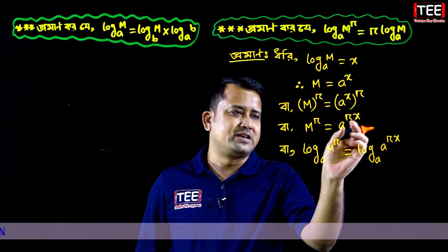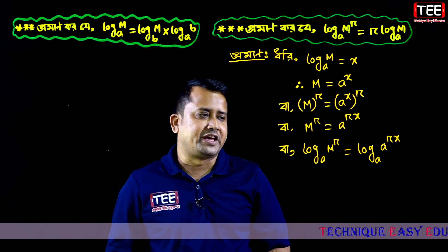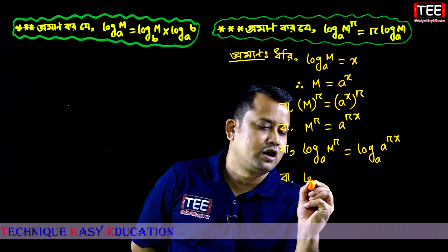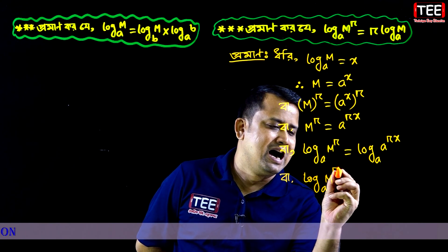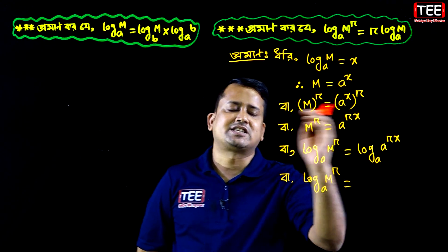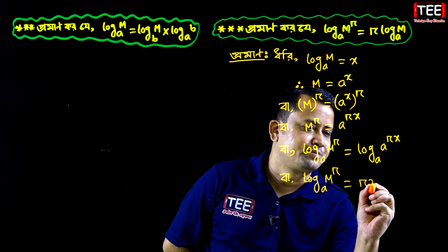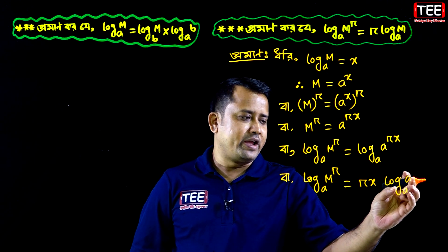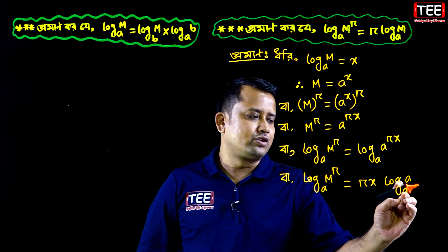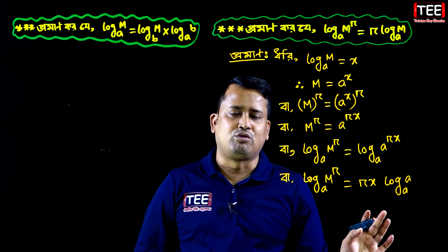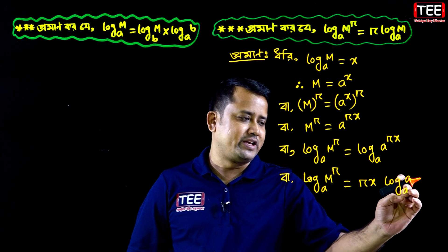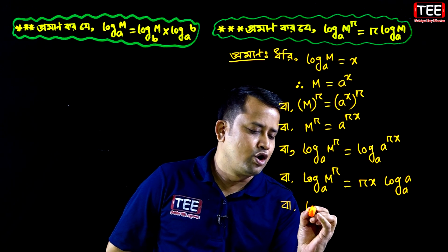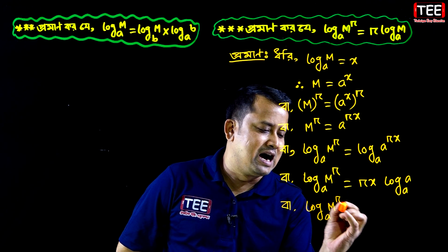Taking log base a on both sides, log base a of a to the power rx. Now, log base a of a equals 1 — whether the base is any number, log of that same base equals 1. So log base a of a is 1.